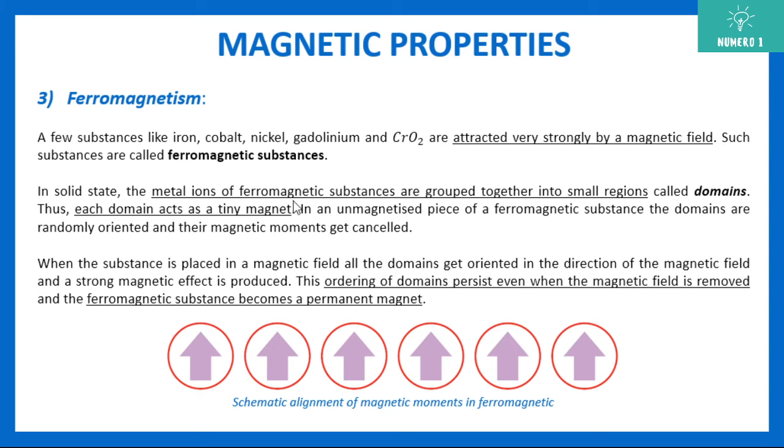So in any metal ion, the ferromagnetic substance, they are grouped together in small regions, which are known as domains. So each domain is acting as a tiny magnet. So what happens when it is an unmagnetized piece, when there is no magnetic field present, the domains are randomly oriented, and they get cancelled each other. So there is no magnetic effect. But when the substance is placed inside a magnetic field, all the domains get oriented, you can see these are small domains, they get oriented in one direction. That is let's say towards upward, and a strong magnetic effect is produced.